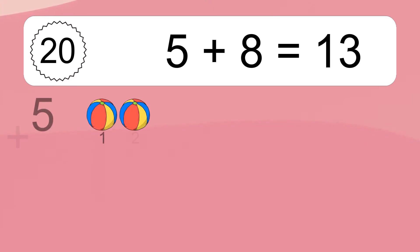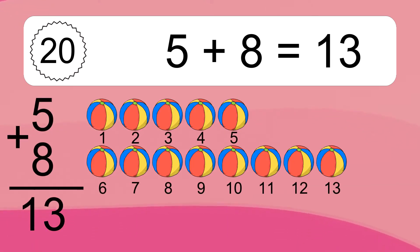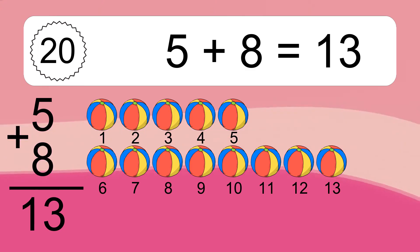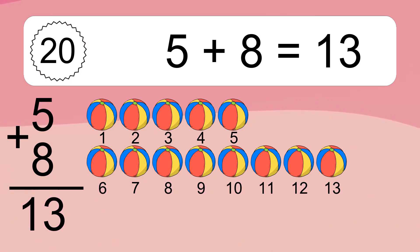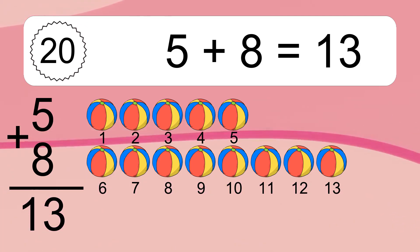5 plus 8 equals what? 5 plus 8 equals 13. Let's count it. 1, 2, 3, 4, 5, 6, 7, 8, 9, 10, 11, 12, 13.